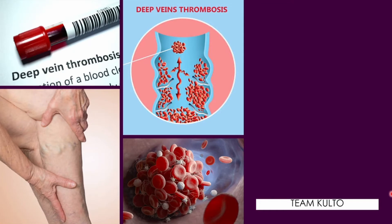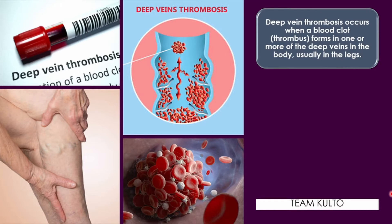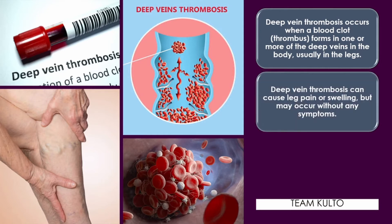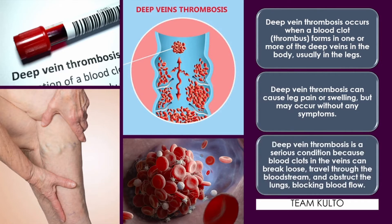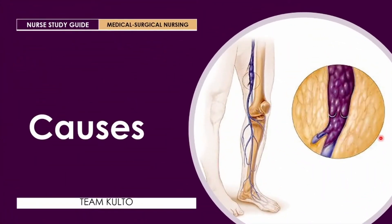Deep vein thrombosis is a part of a condition called venous thromboembolism. DVT occurs when a blood clot or thrombus forms in one or more of the deep veins in the body, usually in the legs. DVT can cause leg pain or swelling but may occur without any symptoms at all. DVT is a serious condition because blood clots in the vein can break loose, travel through the bloodstream, and obstruct the lungs, blocking blood flow.